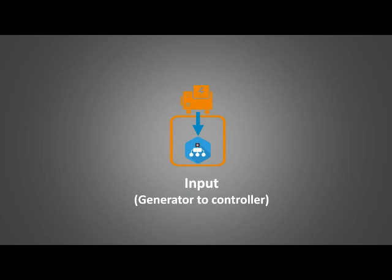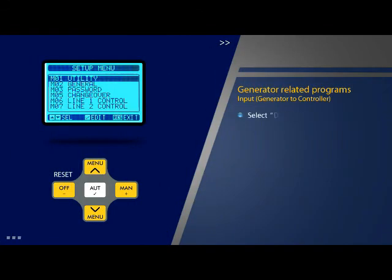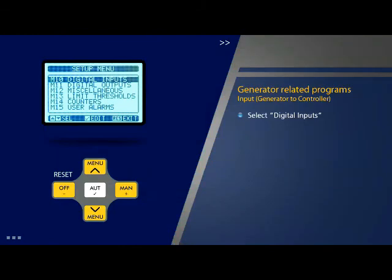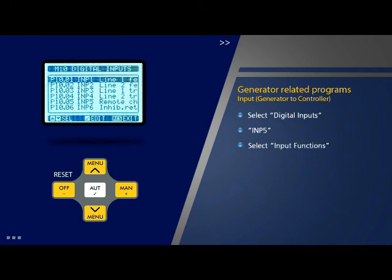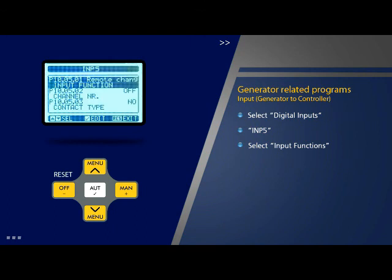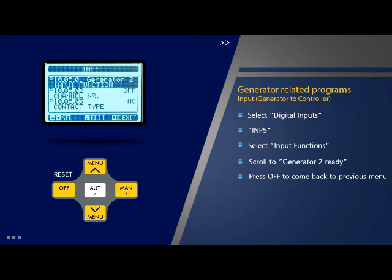Input generator to controller: Feedback from the generator is to be connected to terminal 19 of input 5 of the controller, and programmed as follows. Select parameter 10 'Digital Inputs' on the setup menu page and press OK. Scroll to option 5 which is INP 5 on this page and press OK. Select the first option 'Input Functions' on this page and press OK. Scroll to select the option 'Generator 2 Ready' on this page and press OK. Press off to come back to the previous menu. The option 'Generator 2 Ready' is now selected.